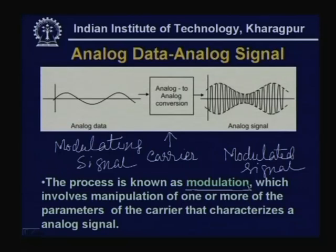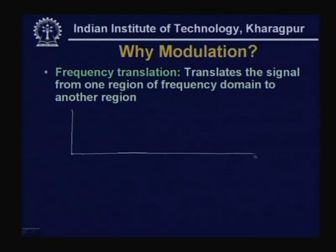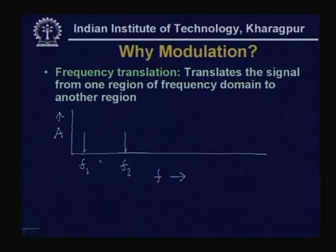You may be asking why modulation is necessary. When you do modulation, one important operation performed on the signal is known as frequency translation — it translates the signal from one region of the frequency domain to another. Suppose you have a signal in the frequency domain with frequency range f1 to f2. By modulation, this signal can be translated to another frequency range, say f1' to f2', which is much higher than the original range.